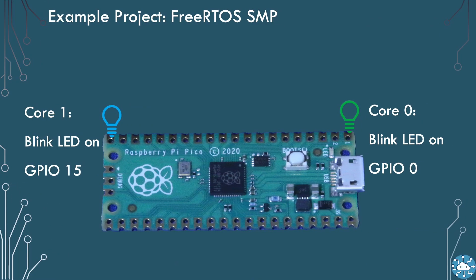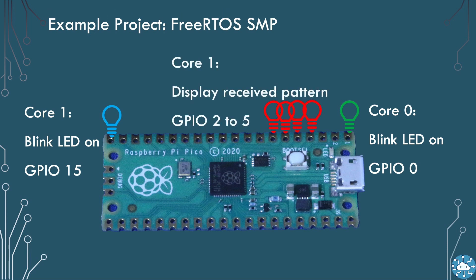In our example, we're going to set up Pico agent tasks in SMP mode. We'll run a copy of blink agent on core 1 to blink a blue LED attached to GPIO 15. A second copy of this blink agent we will fix to core 0 and have it blink a green LED on GPIO 0. Then we'll set up a counter agent to display a binary value between 0 and 15 as a pattern on the 4 LEDs on GPIO 2 to 5.